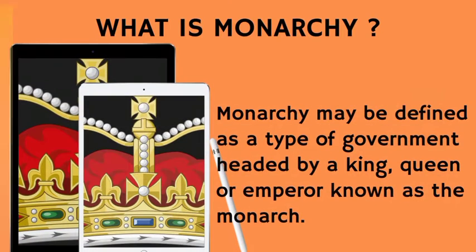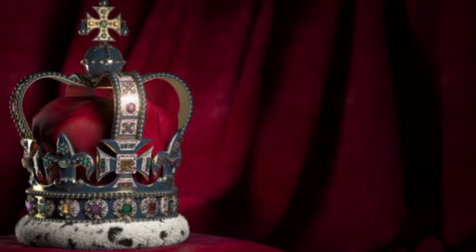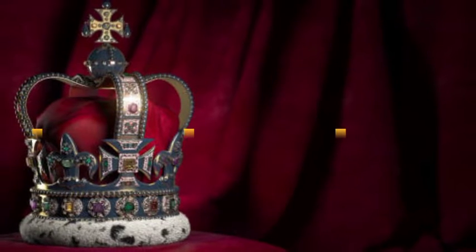What is monarchy? Monarchy may be defined as a type of government by one individual. This individual may be a king, queen, or emperor known as a monarch. It is also a type of government headed by one person known as a king, queen, or emperor.